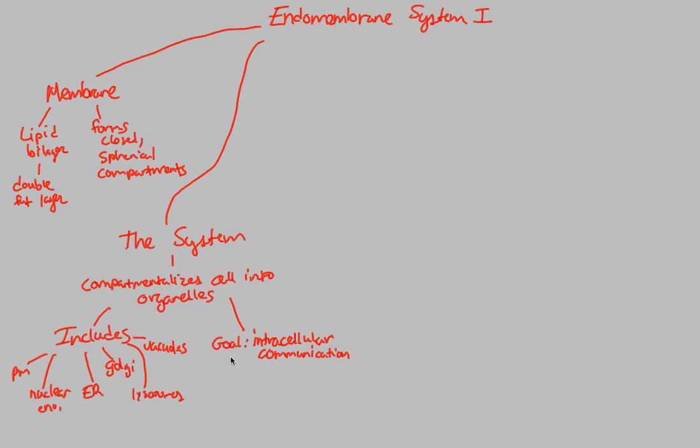This communication within the cell is aided by the fact that this endomembrane system promotes direct physical continuity. This basically means that each of these membranes are all interconnected, so that we have intracellular communication, and this interconnected system allows for the transfer of membrane segments. This is an interesting idea, and what it really entails is this idea of budding. Specifically, vesicle budding is what is going to allow this overall intracellular communication.